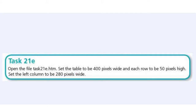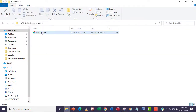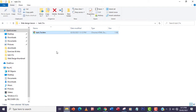When we talk about the table being 400 pixels wide, we are going to look at the table tag. This row is talking about the tr, and then the column — we are going to be referring to the th or the td. So I'm going to open the file task21e.htm in a browser.